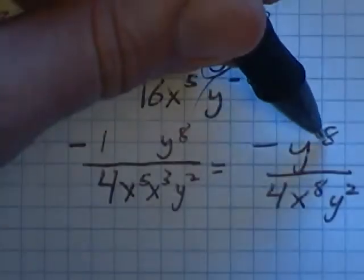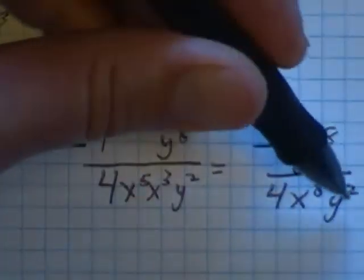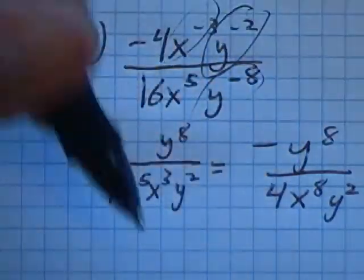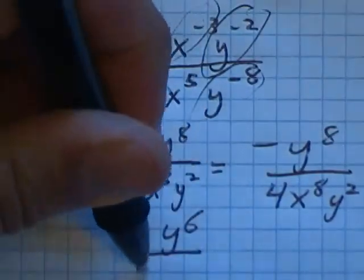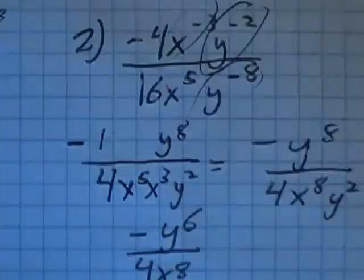And I'm not quite done yet, because I can do some simplifying here. Two of these y's cancel out two of those y's, so that leaves me negative y to the sixth, four x to the eighth.